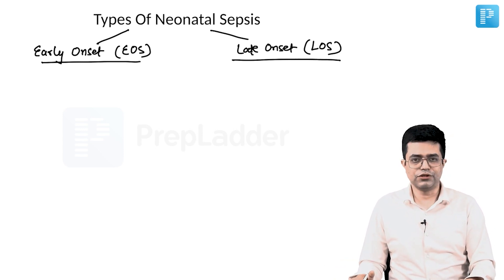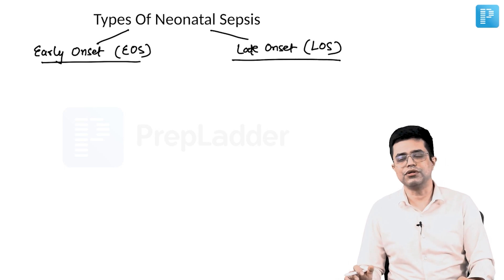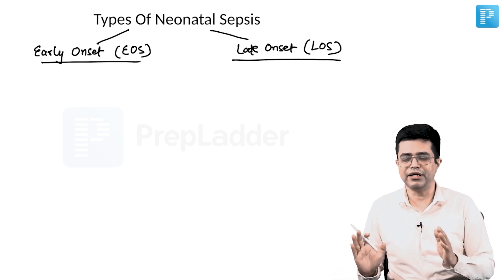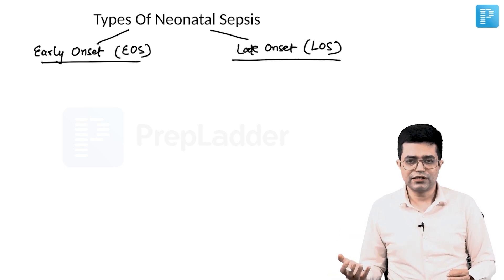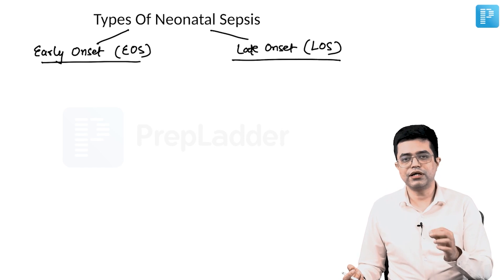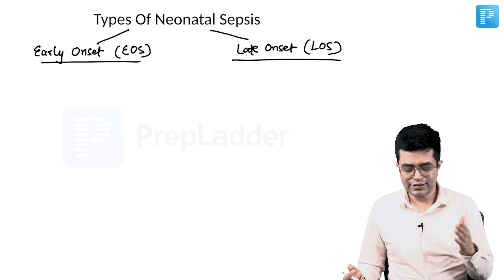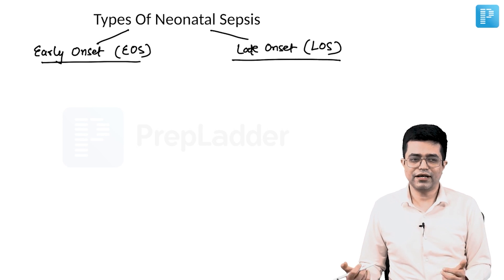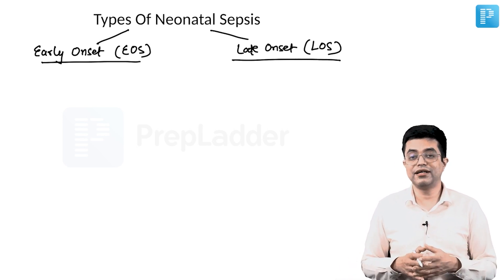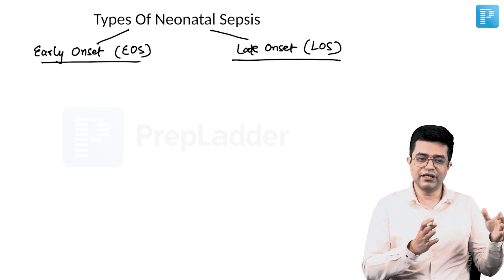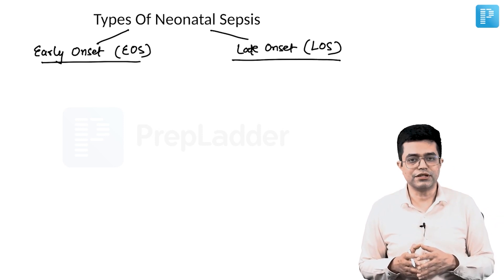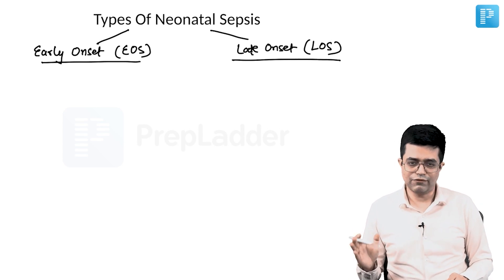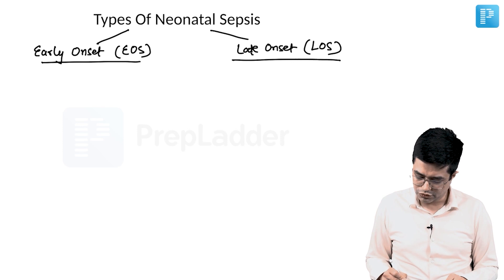The definition of early and late onset is different in the western world versus WHO and India. In India and WHO guidelines, we take 72 hours as the cutoff after birth, whereas in the western world it is 7 days. Recently, western guidelines are also moving toward 72 hours. We'll follow the definition given by WHO and followed in EAMS and PGA protocols.